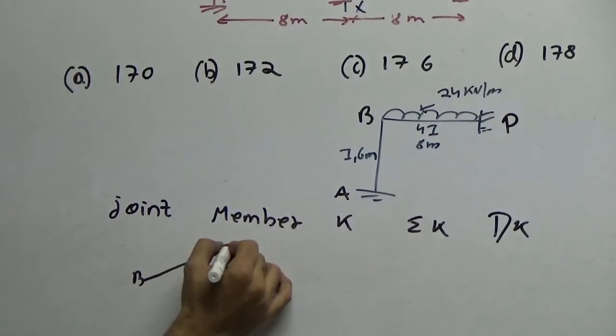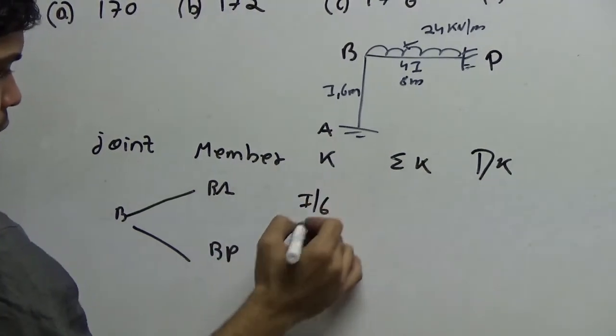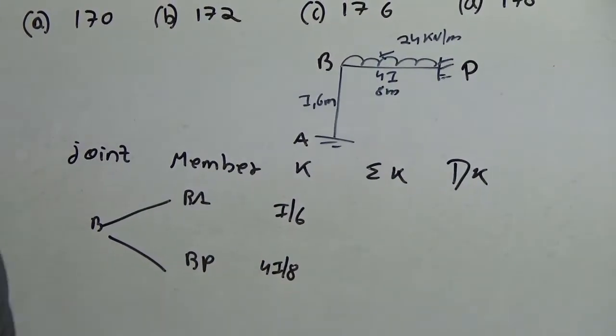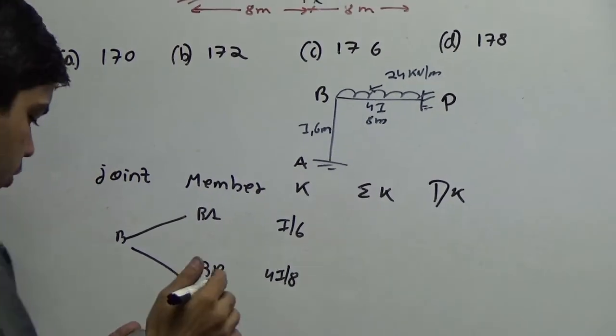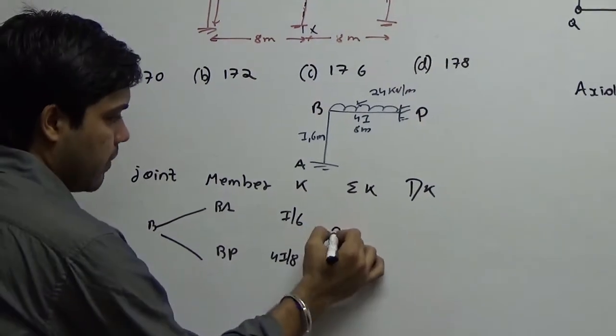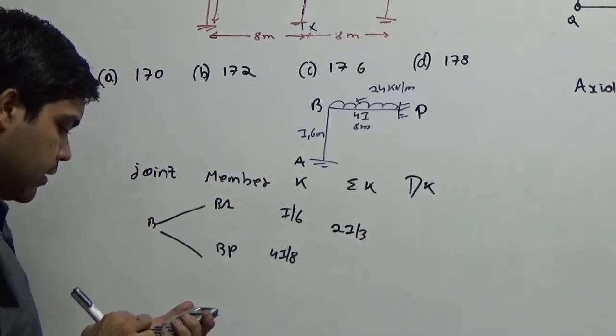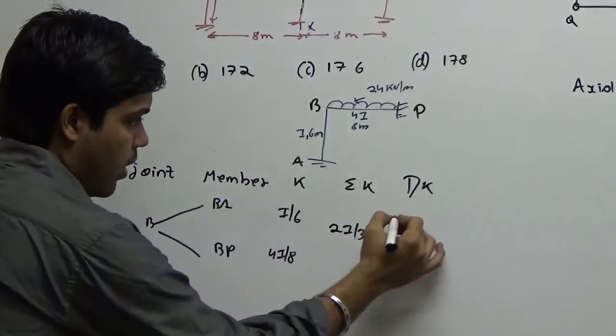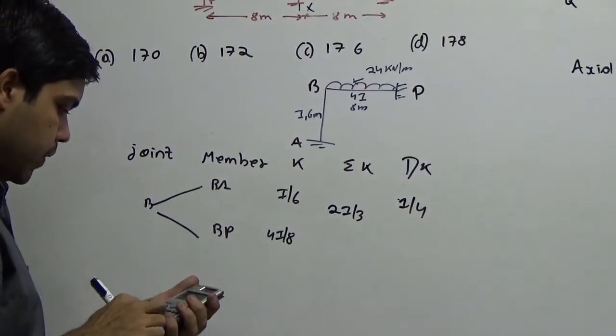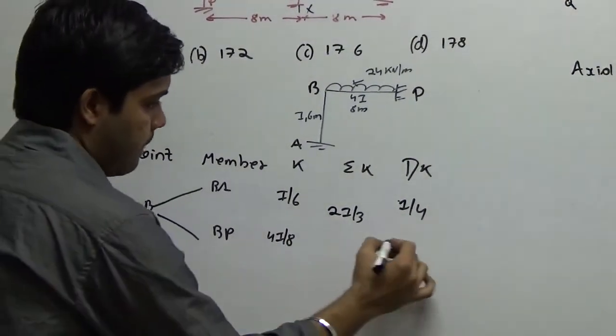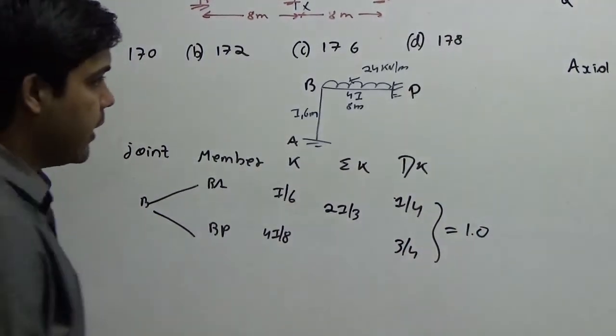Now the joint B is BA and BP. What is the stiffness for this? i by 6. What is the stiffness for this? 4i by 8. So what is the sum of stiffness? 1 by 6 plus 1 by 2, you have 2i by 3. So 1 by 6 divided by 2 by 3 gives you 1 by 4 here and this has to be 4 by 8 divided by 2 by 3, that is 3 by 4. Keep a note that the sum of this should be 1.0.